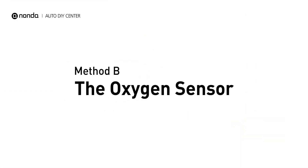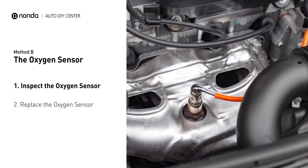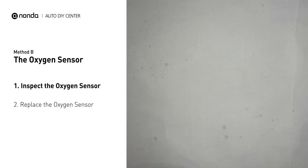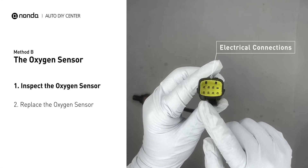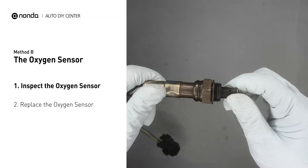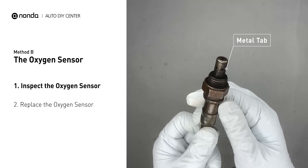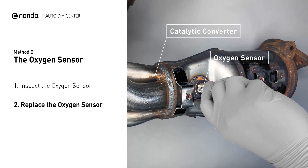Method B: the oxygen sensor. Oxygen sensors are mounted directly onto the exhaust pipe near the catalytic converter. Locate the sensor that responds too slow as it ages. Visually check the oxygen sensor's electrical connections, wire harness, and metal tabs for any damages. If damages are found, then replace the oxygen sensor.